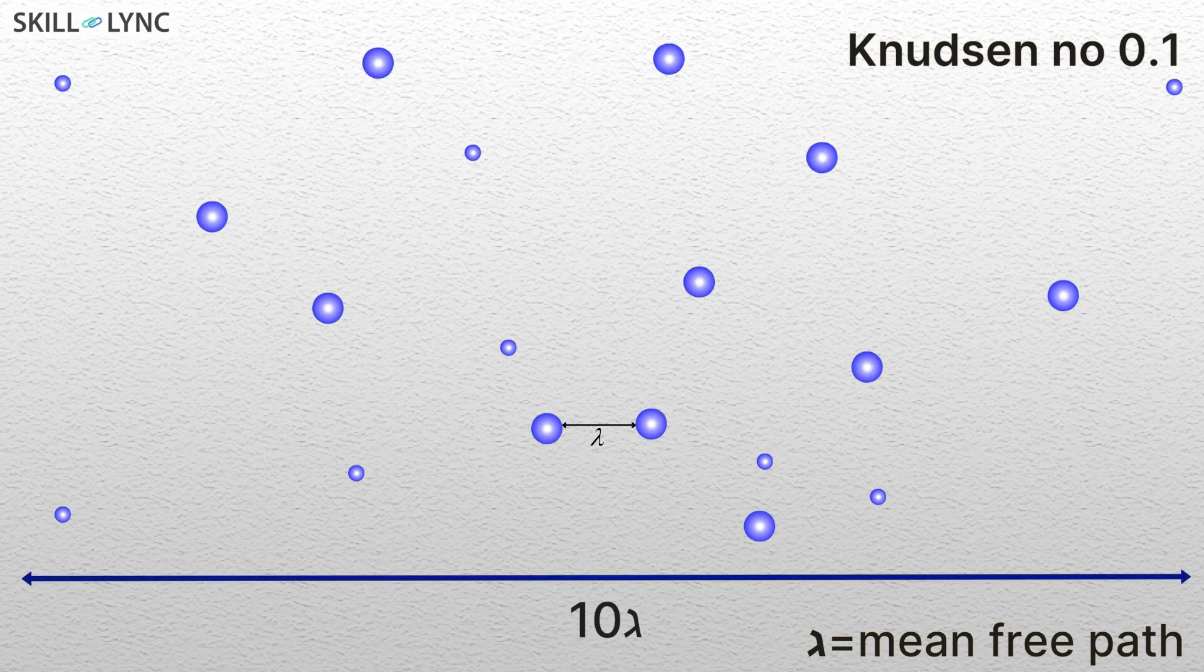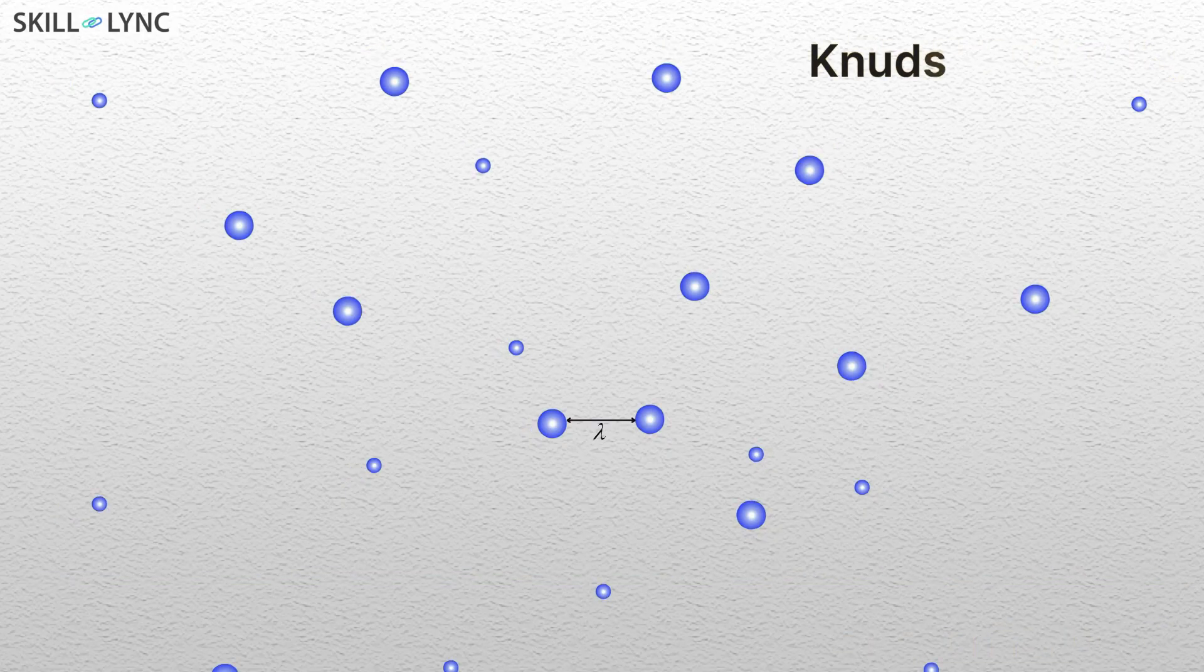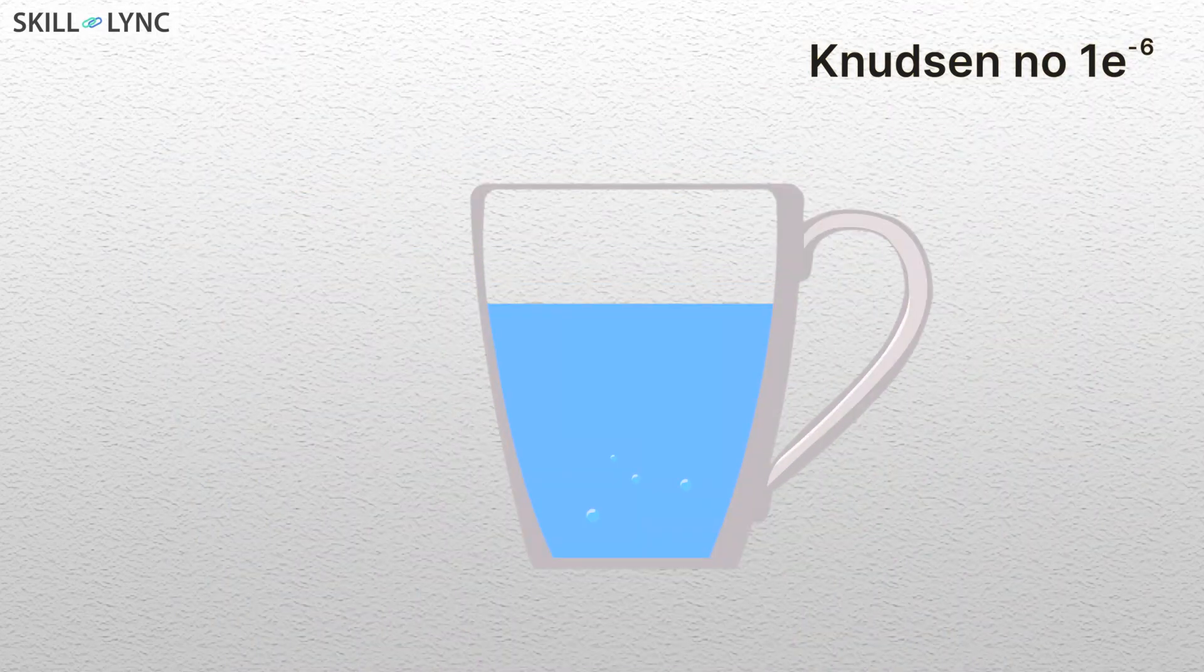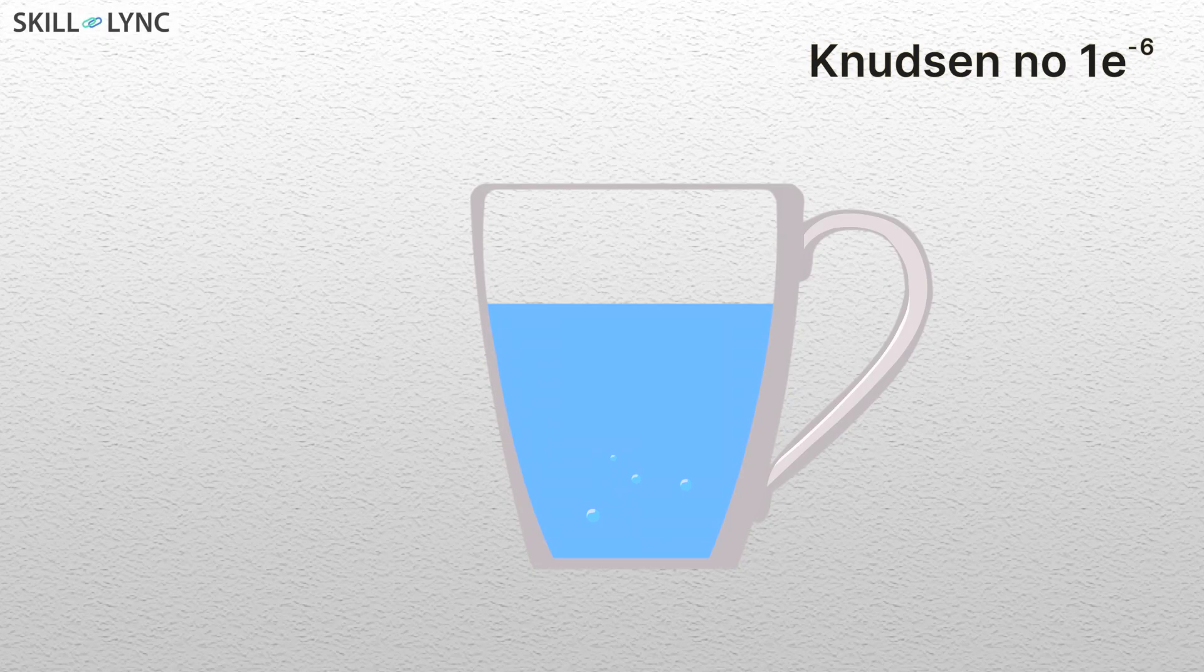If Knudsen number is very small, say 1e-6, that means our engineering domain is at least a million times larger than the mean free path.